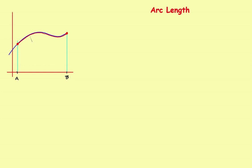I'll divide it up and use four little line segments to start with. Starting from here, going to here, then to here, then here, and here — that gives me four little line segments. I can't find a formula for the blue curve, but I can find the length of a straight line using the distance formula. So I'll go ahead and derive a formula for finding that.